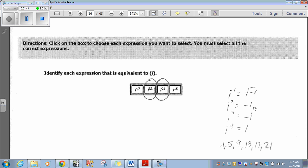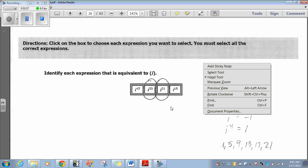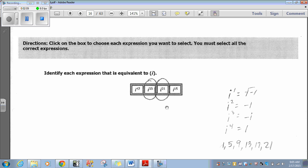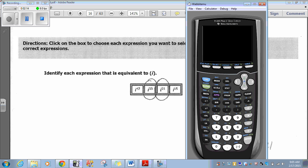I squared is actually negative 1. I cubed is negative i. And i to the fourth is 1. And then this pattern repeats for 5, 6, 7, 8, 9, 10, 11, 12, 13, 14, 15, 16, et cetera, et cetera.